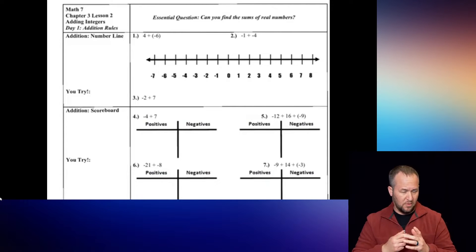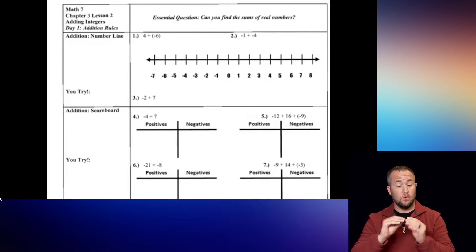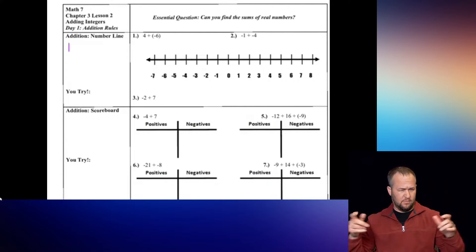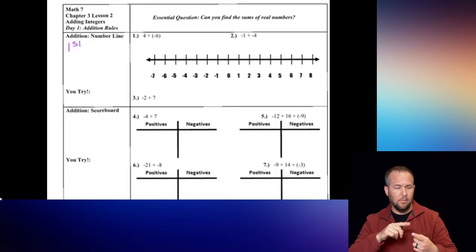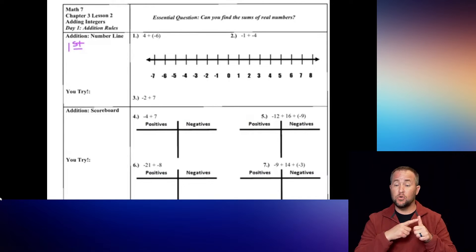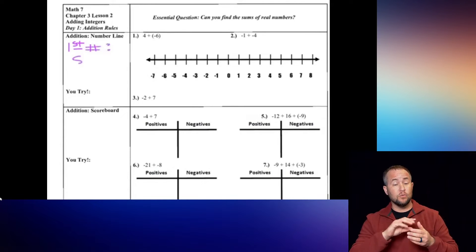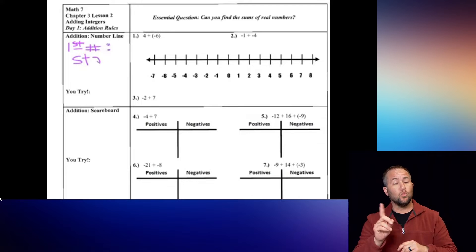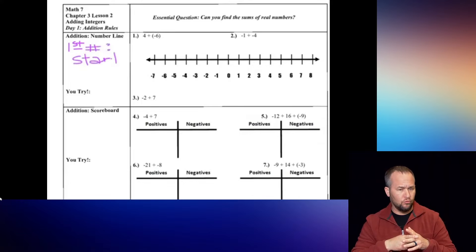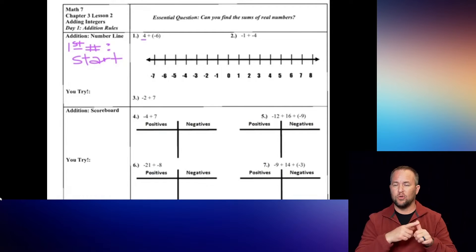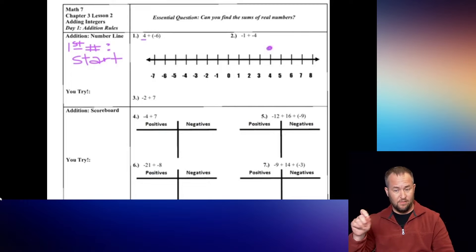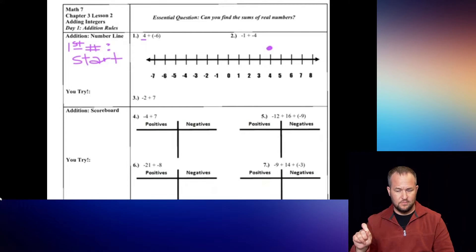The first way we'll talk about is the number line. The first number is going to be where you start. So for instance, in this first example, the number 4 is going to be where I start, so go ahead and put that dot on the number 4 on the number line.